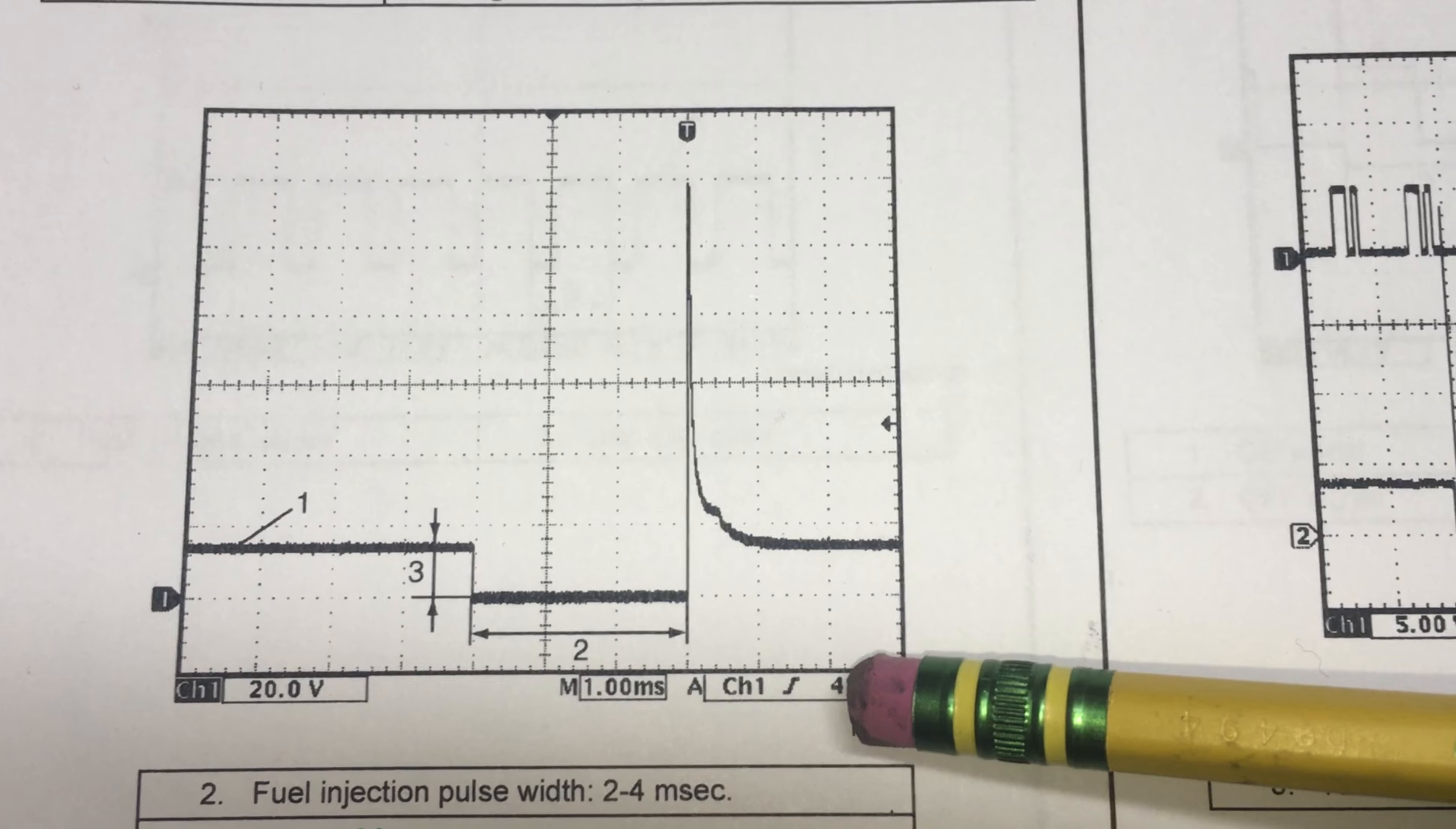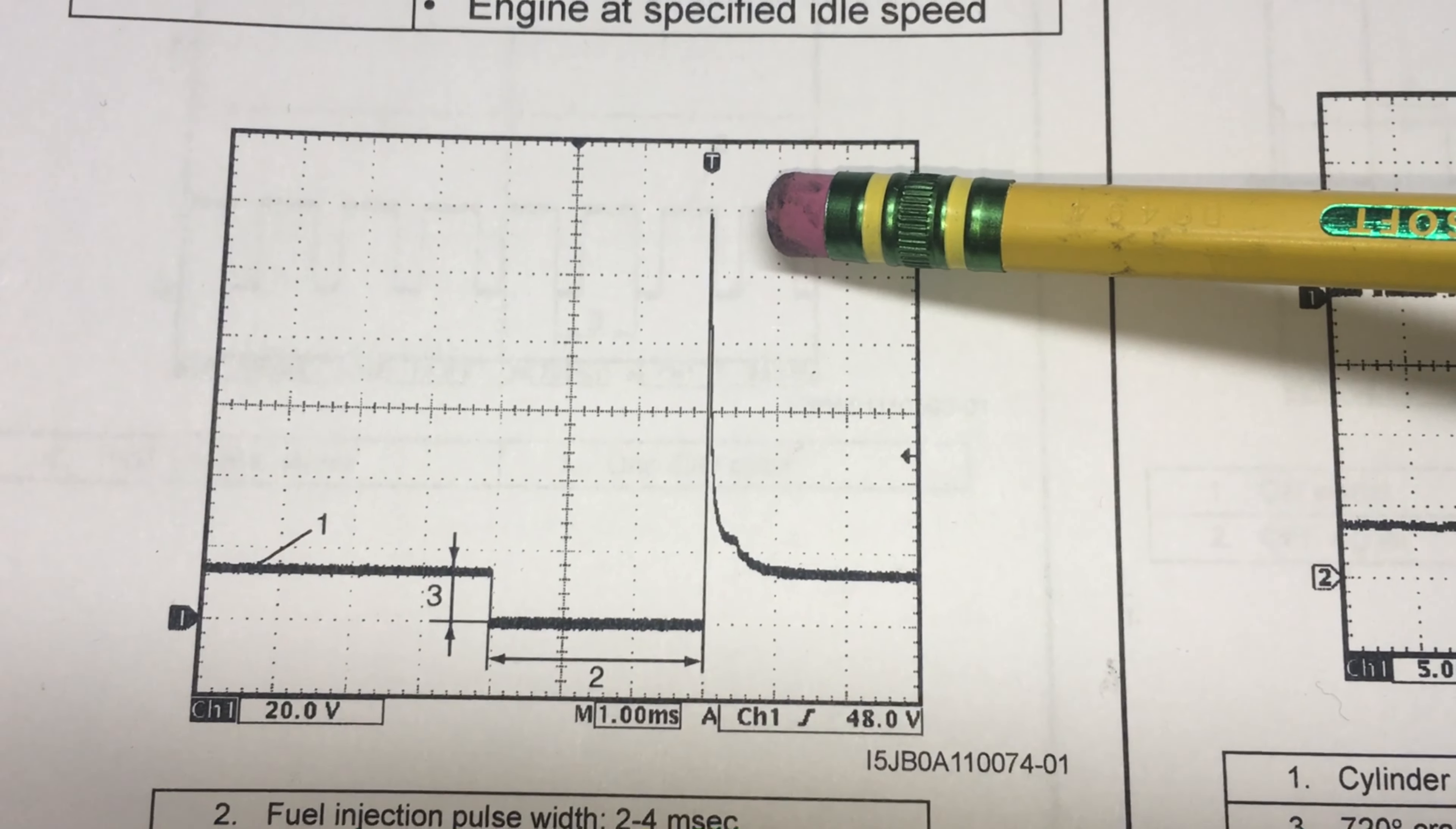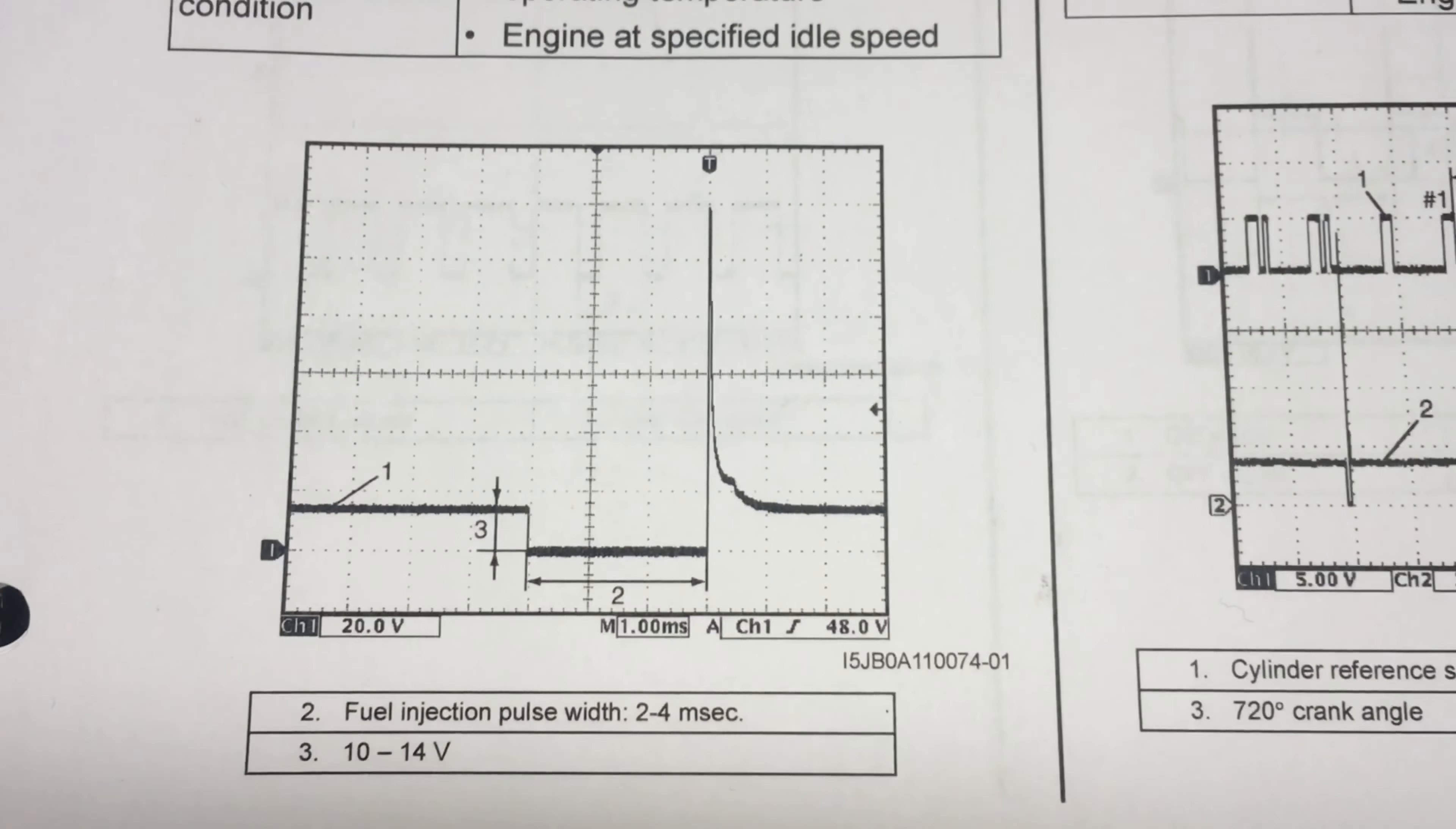Let's count it: 20, 40, 60, 80, 100, 120 volts. This spike actually goes up to like 120 volts. In fact, you can see here there's the trigger setting, both settings for the trigger, and that's 48 volts at that point right there.